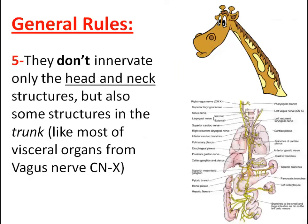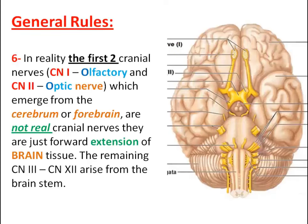like most of the visceral organs, from the Vagus nerve, cranial nerve 10. Six: in reality the first two cranial nerves, olfactory and optic nerve, which emerge from the cerebrum or forebrain, are not real cranial nerves. They are just forward extensions of brain tissue. The remaining cranial nerves arise from the brainstem.